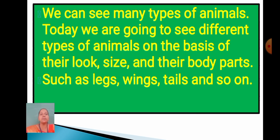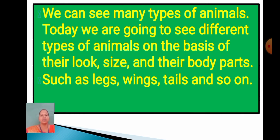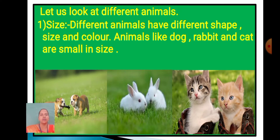We can see many types of animals. Today we are going to see different types of animals on the basis of their look, size, and their body parts such as legs. Some animals have 2 legs, some have 4 legs, some have many legs, some have wings, some have tails, and so on.